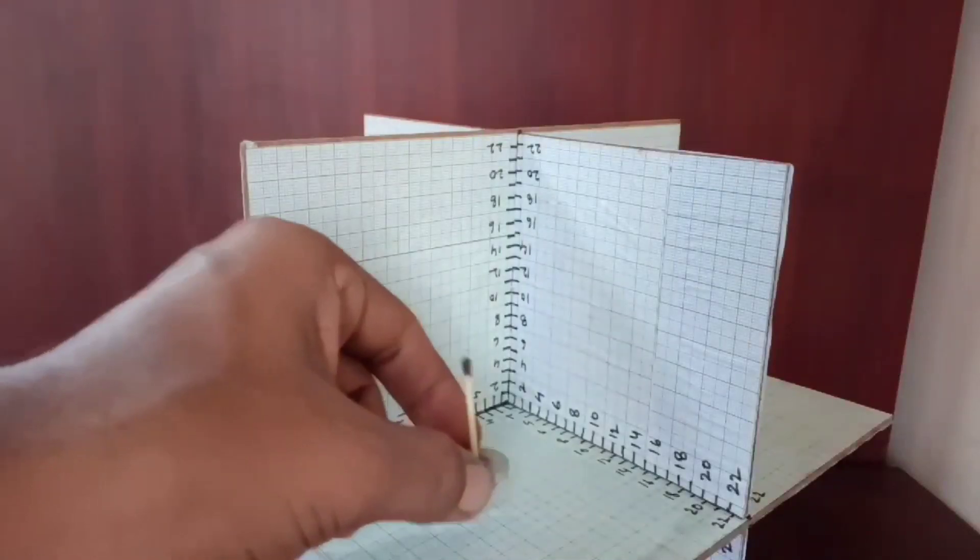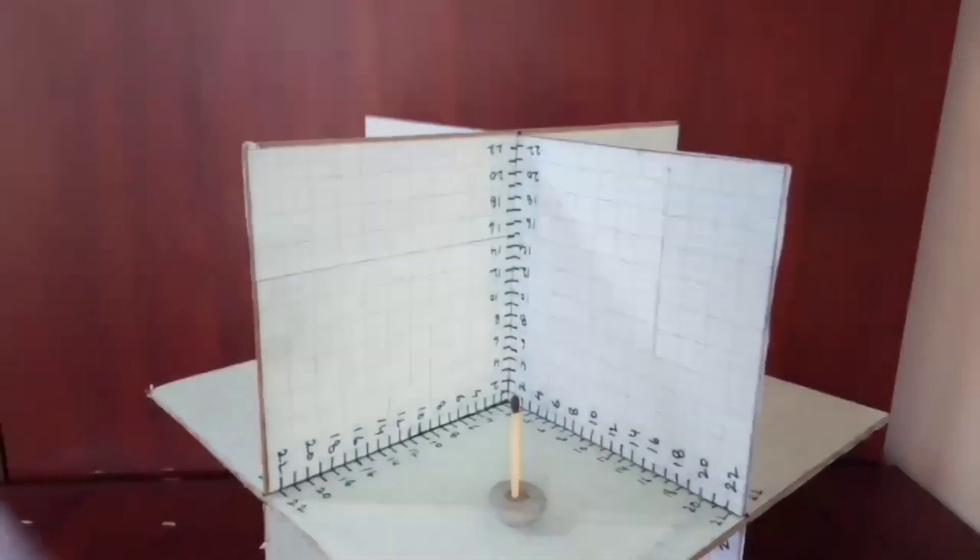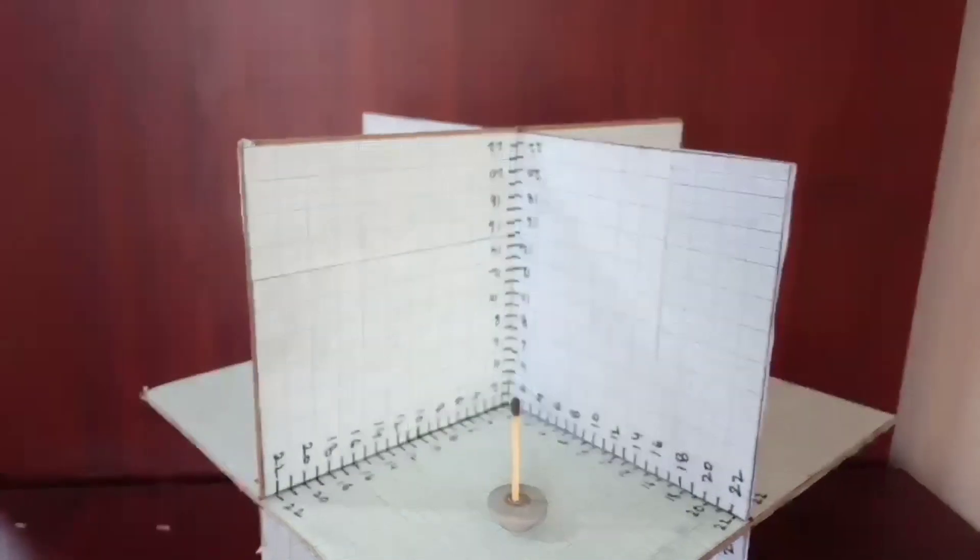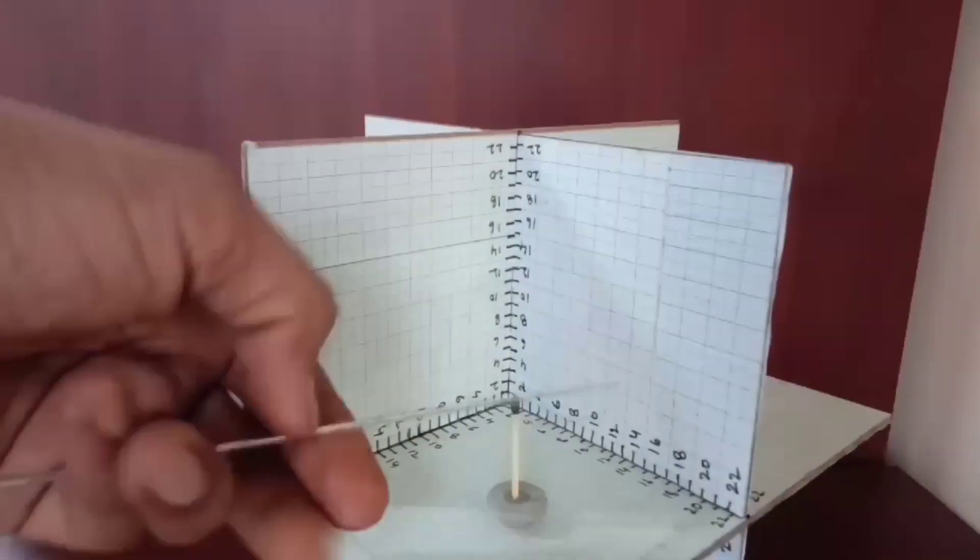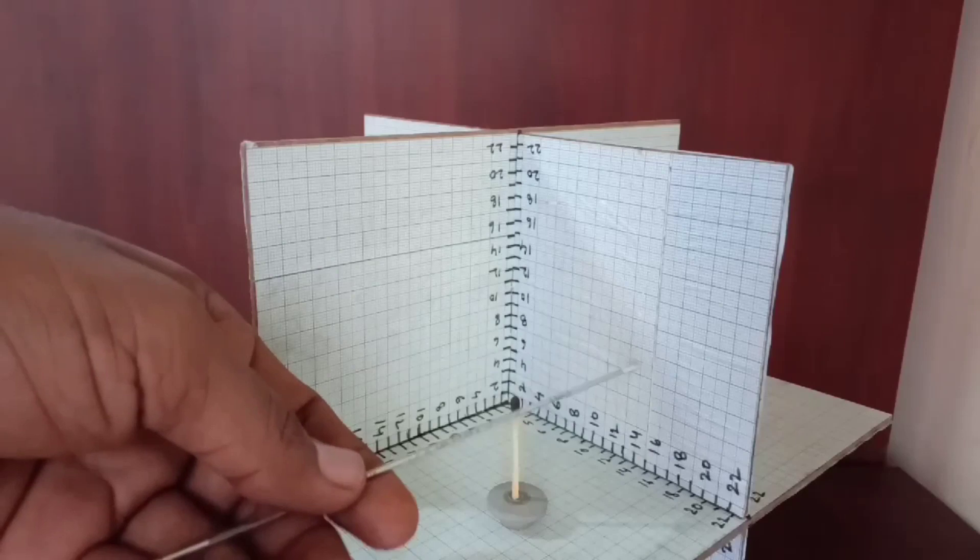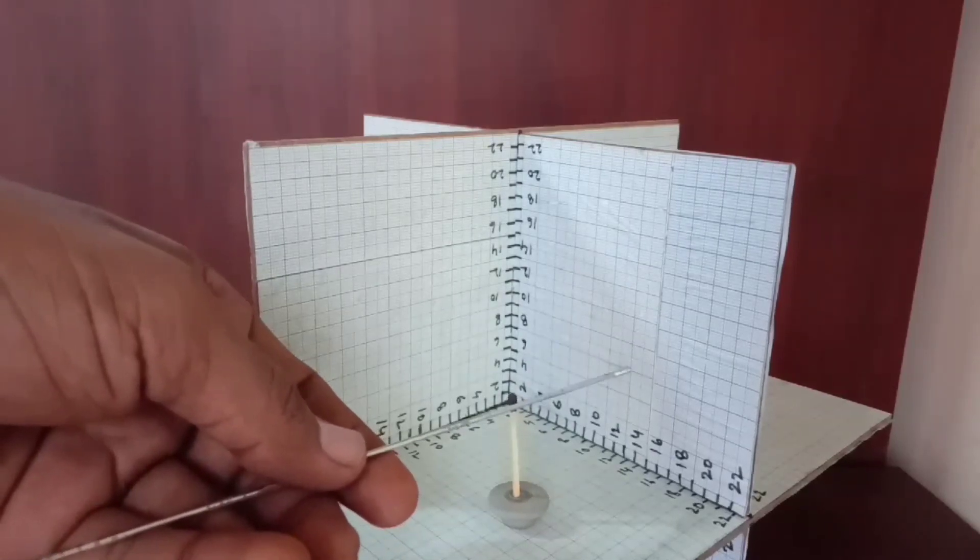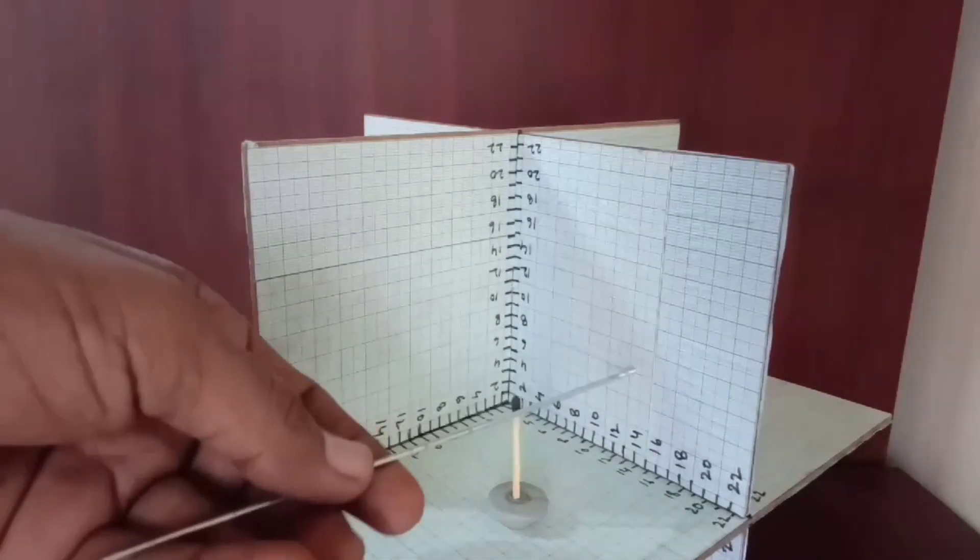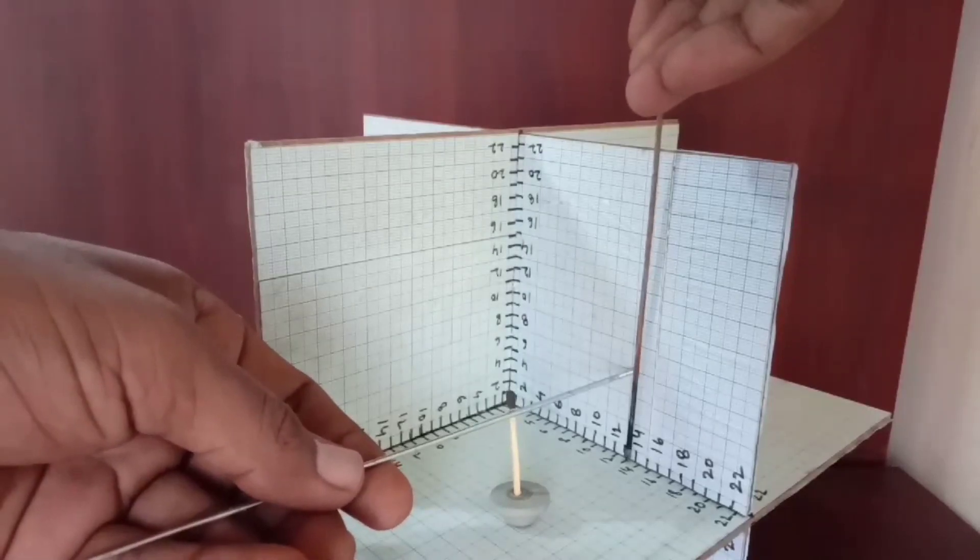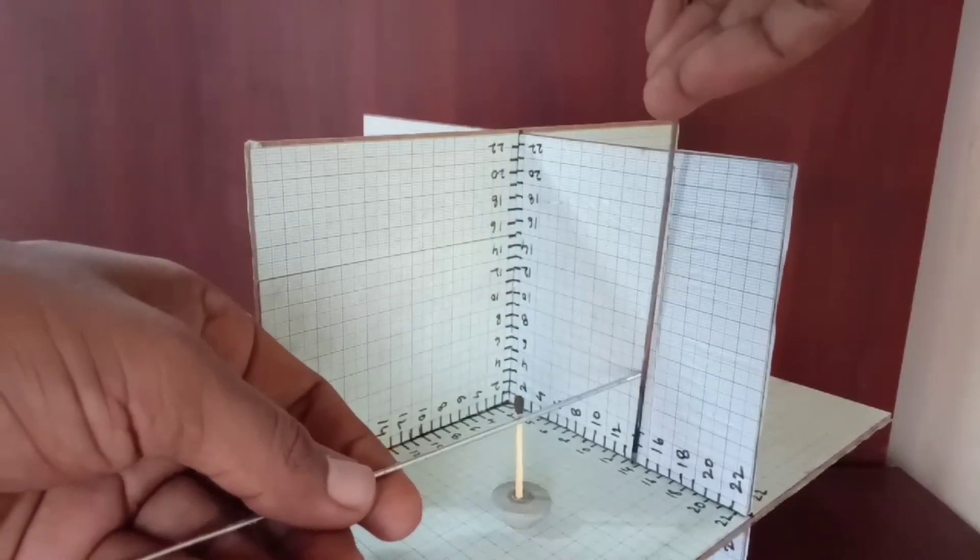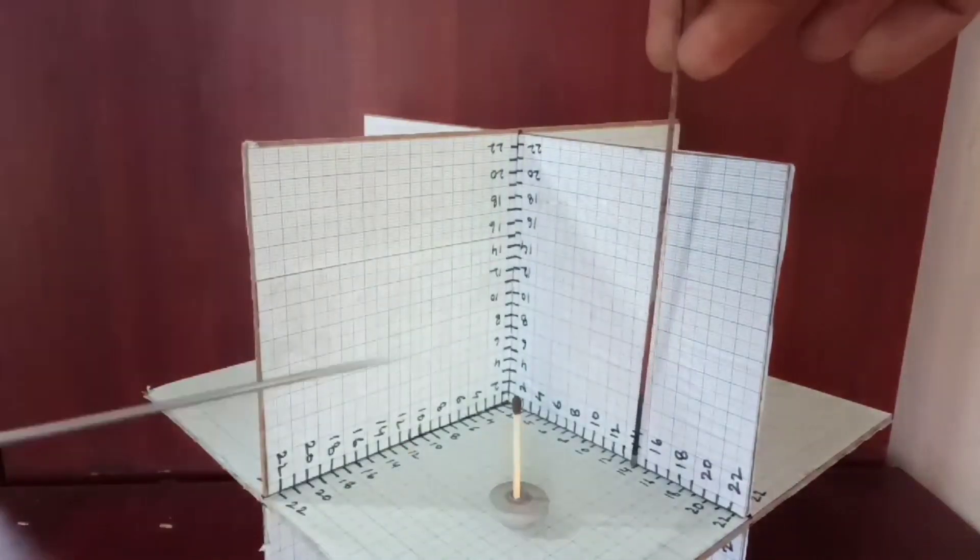Now let us demonstrate. Now to demonstrate, insert a matchstick in a bottle cap and place it on the model. Its black head is our point P in three-dimensional space. Now we will find x, y, and z coordinates for this point P.